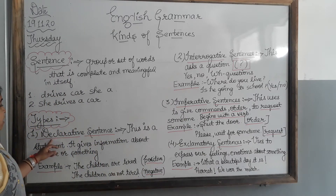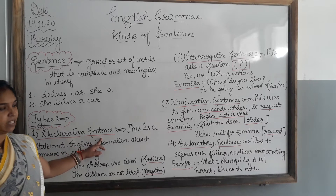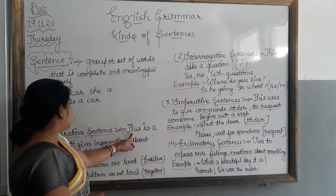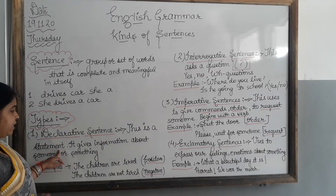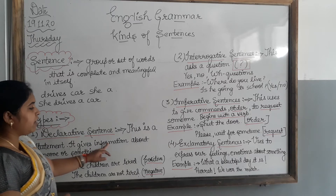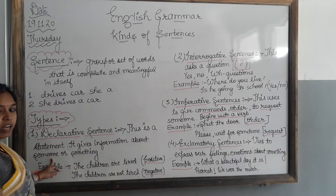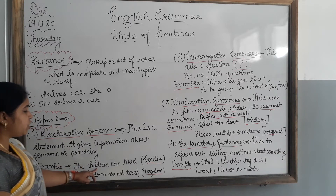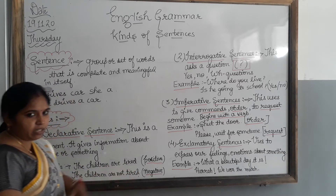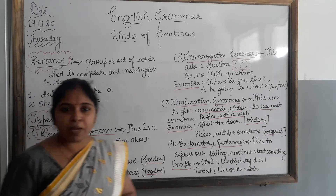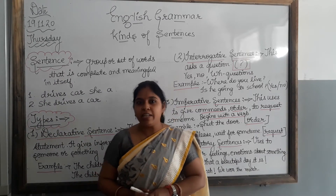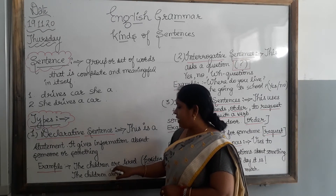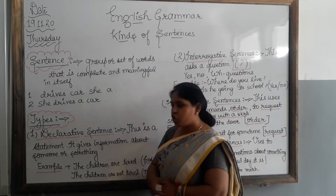What are declarative sentences? A declarative sentence is a statement. It gives information about someone or something. For example: 'The children are tired.' This sentence gives information about the children — what are they doing? They are tired. So this is a statement about the children.